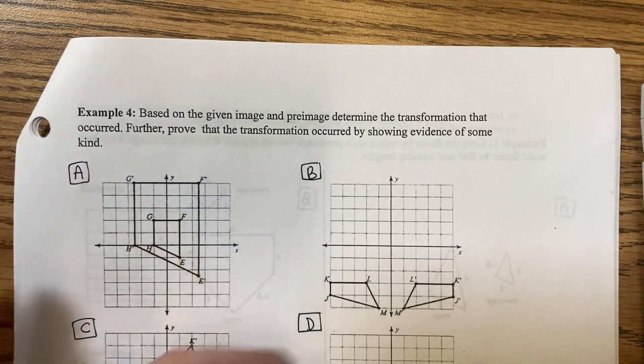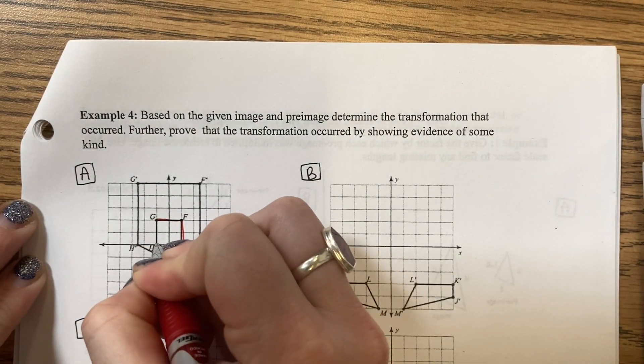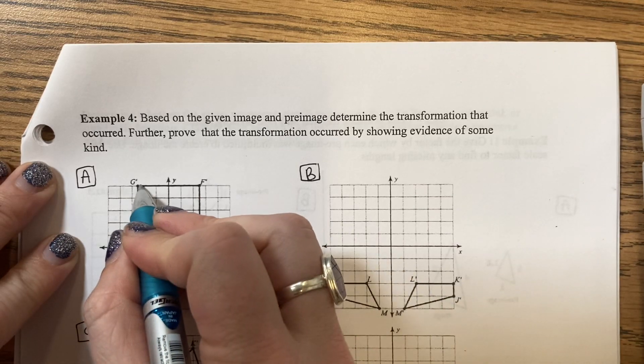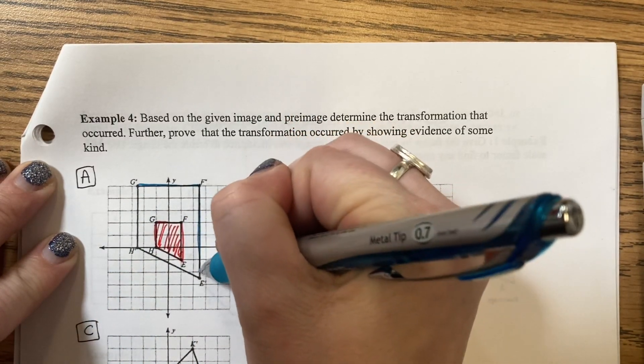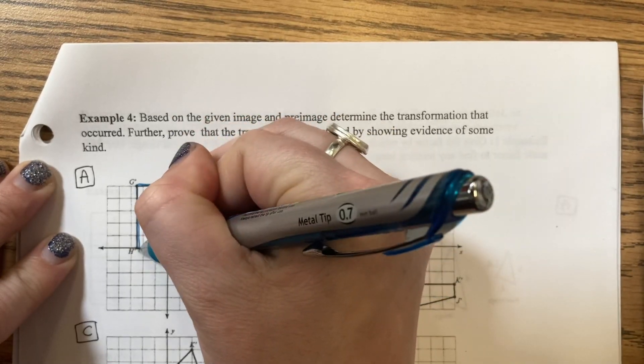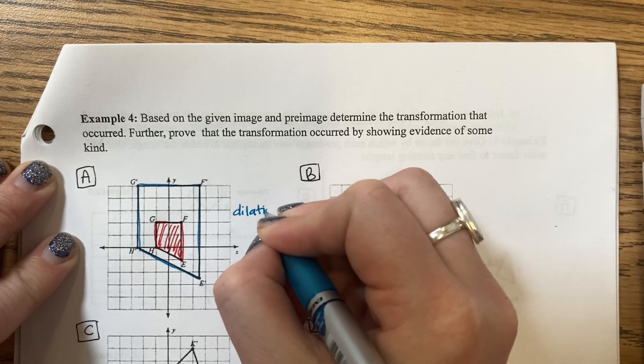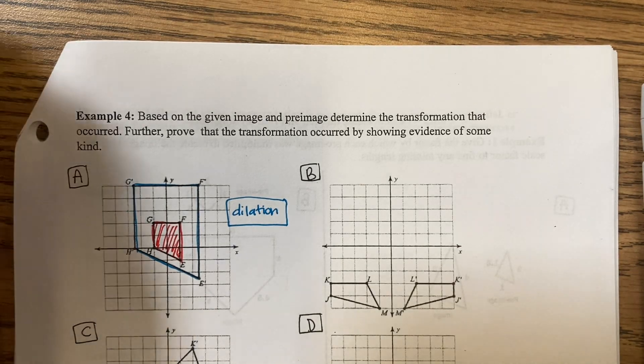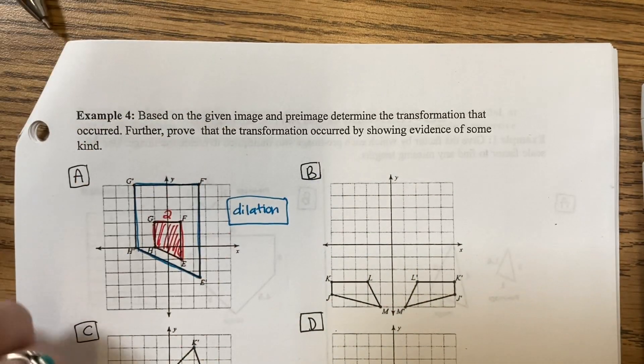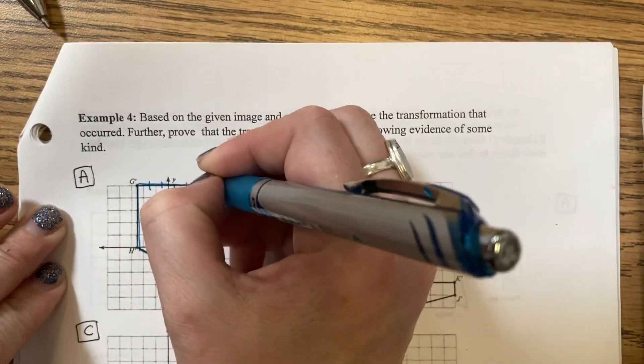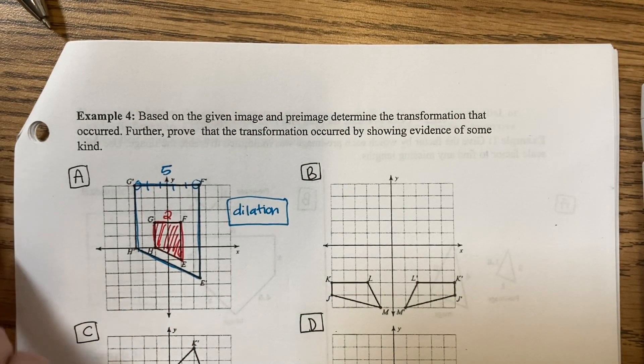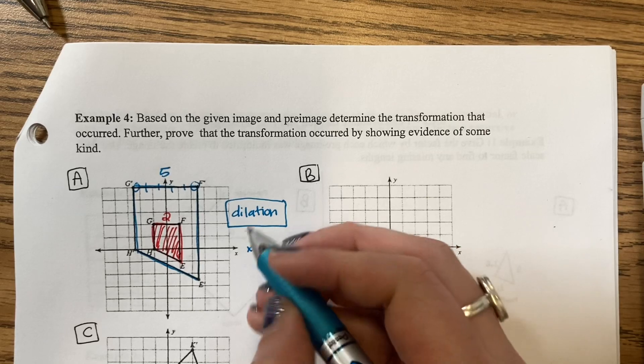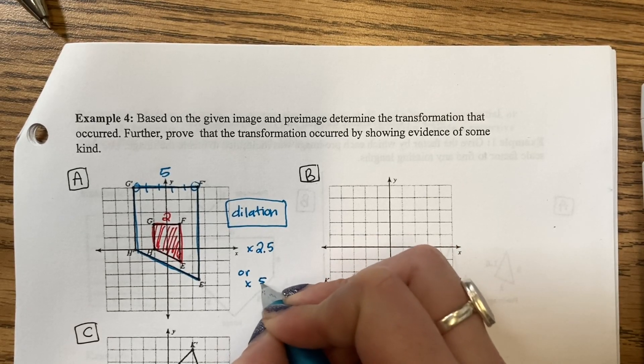The next question we are given G, F, E, H. This is our original image or pre-image. And then we have a transformation where it grows. It became bigger. When it becomes bigger, that is called dilation or dilated. This was originally a 2. And it grew to become 1, 2, 3, 4, half and half make 5. In order for it to grow from a 2 to a 5, I would have to multiply by 2.5. Or I could say multiply by 5 over 2.